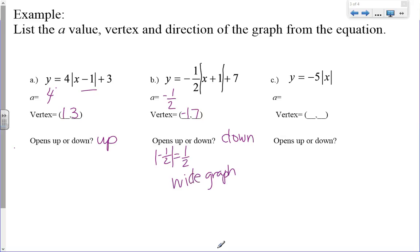For c, the a value is negative 5. The vertex, there's nothing in there with the x, so that means we have an h value of 0. We're not adding anything here. There's nothing to be added. So that means my k value is 0. So in this case, my vertex is at the origin. The a value is negative, so it's going to open down.